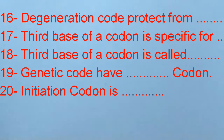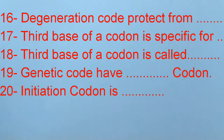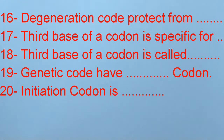Number 17: The 3rd base of a codon is specific for ___. Number 18: The 3rd base of a codon is called ___. Number 19: Genetic code has ___ codons. Number 20: Initiation codon is ___.